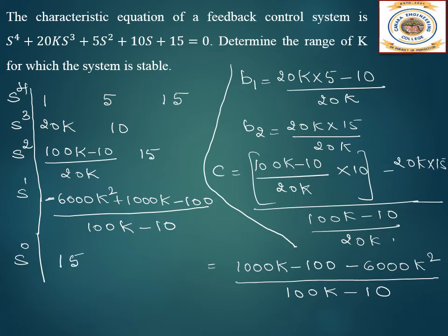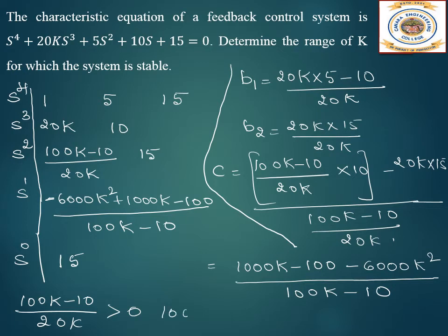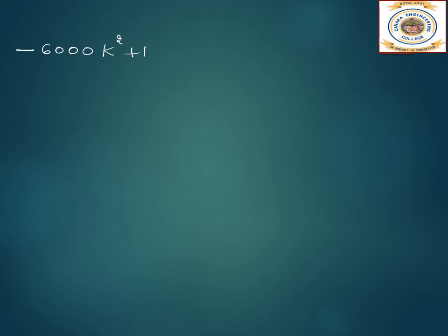Finding the range of k: first, 20k > 0 gives k > 0. Then (100k − 10) / 20k > 0 gives 100k > 10, so k > 0.1. Next we need the s¹ element to be positive: −6000k² + 1000k − 100 > 0.